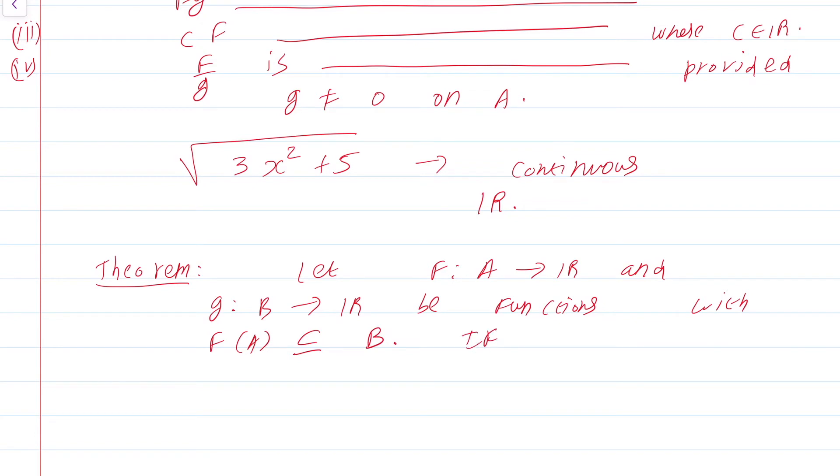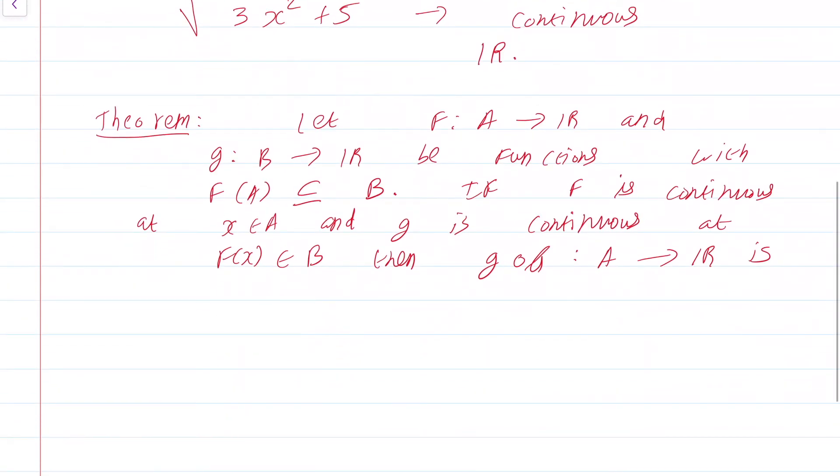If f is continuous at x in A and g is continuous at f of x, which is an element of B, then g composed with f, which is a function from A to R, is continuous at the point x.